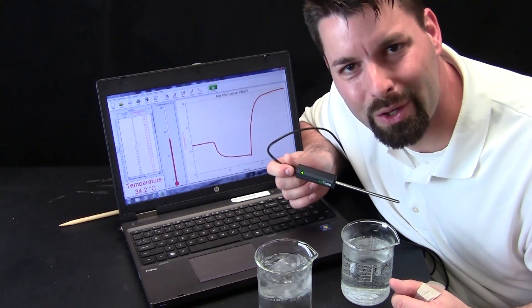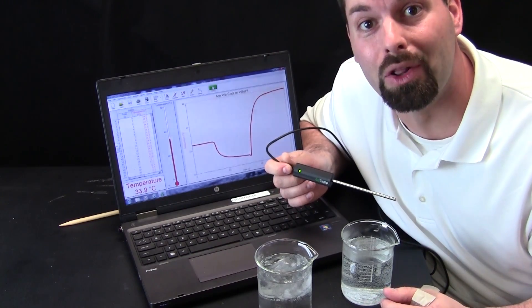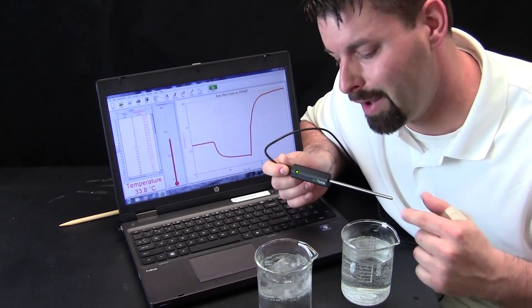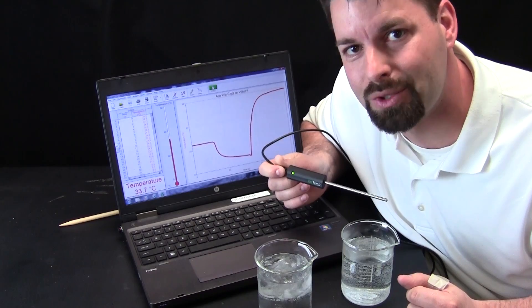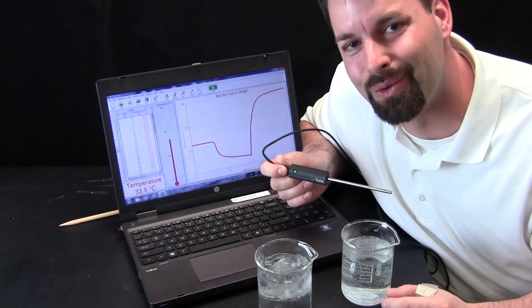This neat little thermometer is called Gotemp and it is put out by a company called Vernier. They are a great company to work with. If you want to learn more about heat energy or find out more about getting one of these Gotemps for your school, check out our links in the video description. Science is so cool. Thanks for watching.